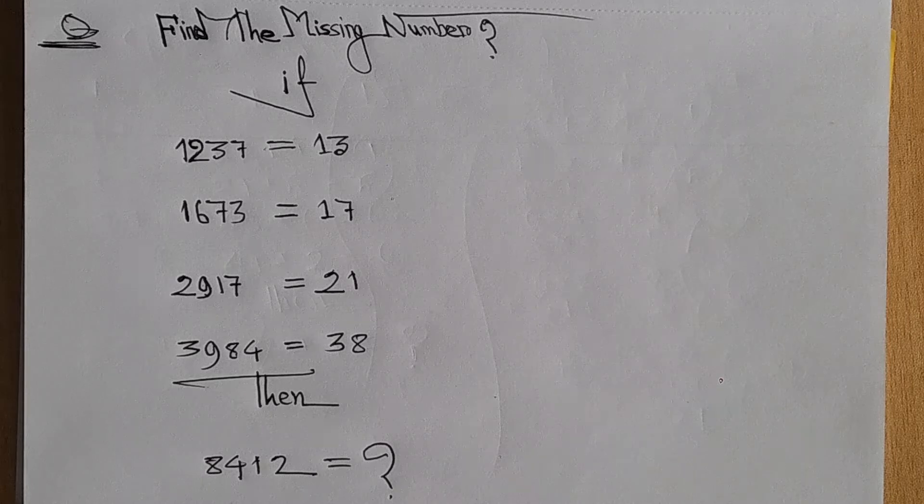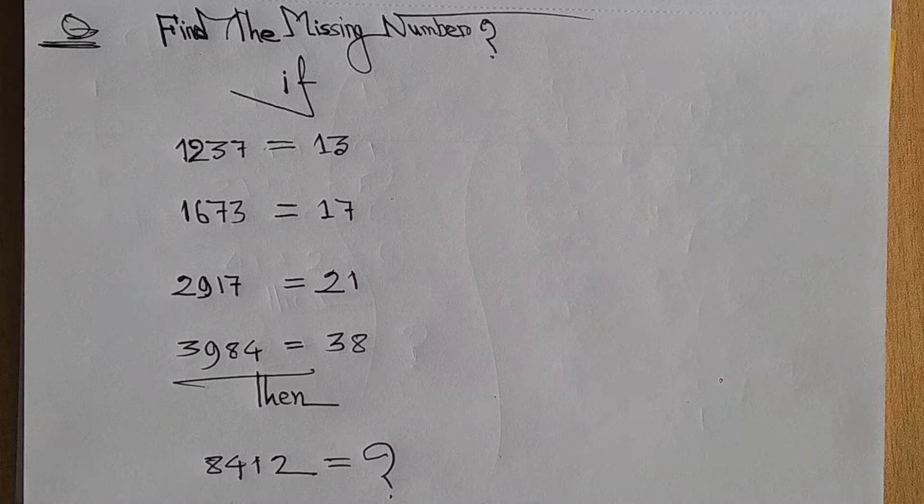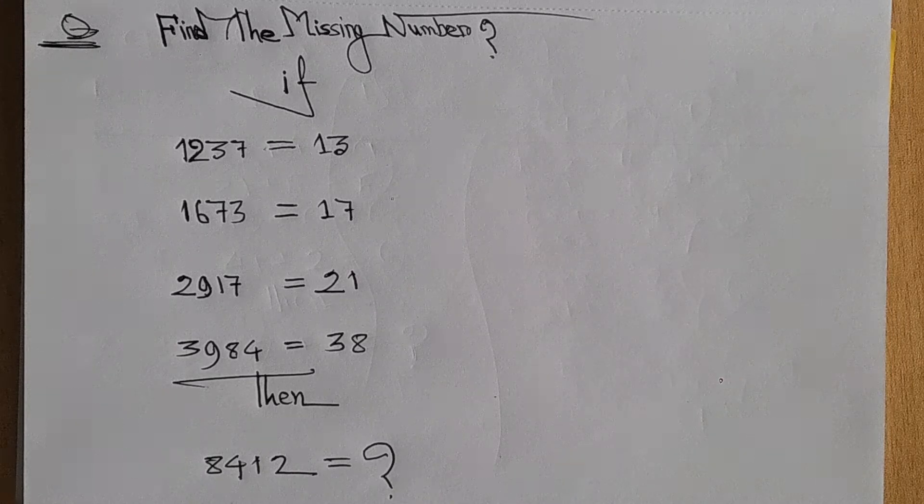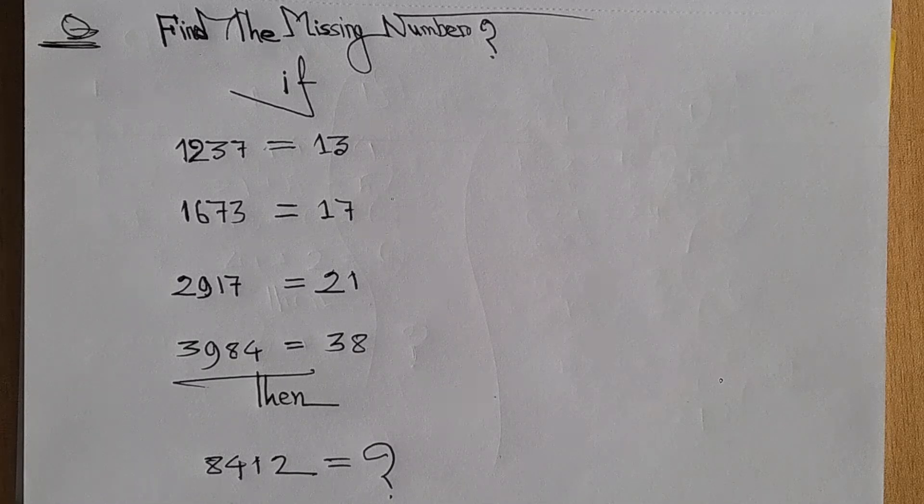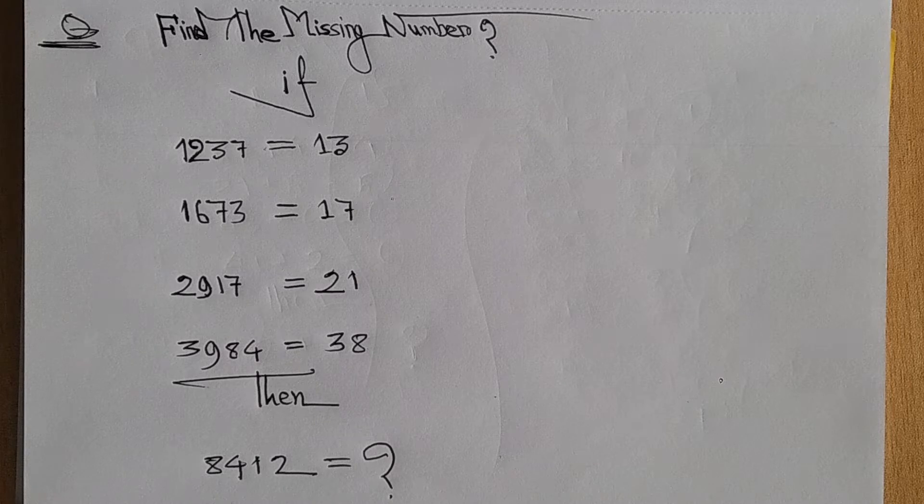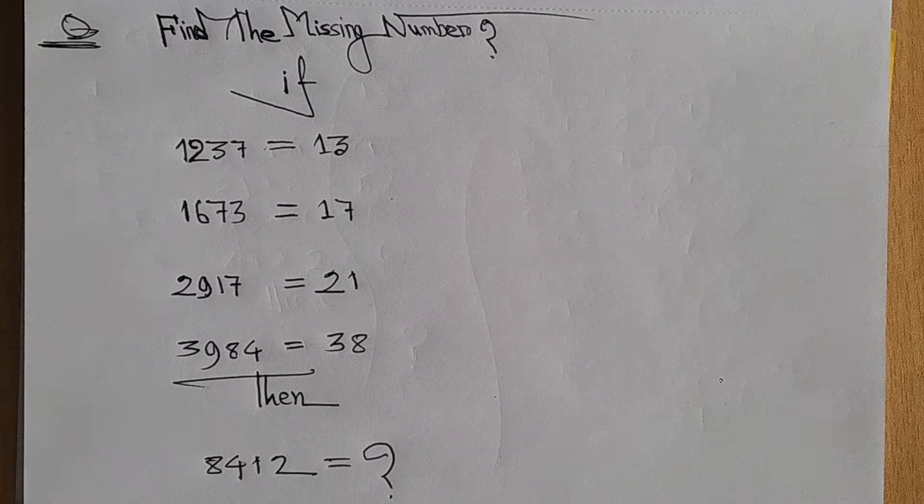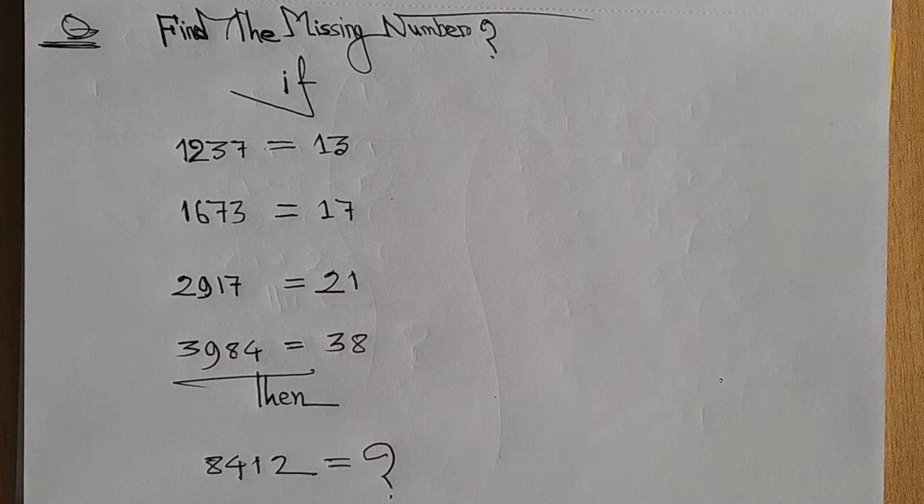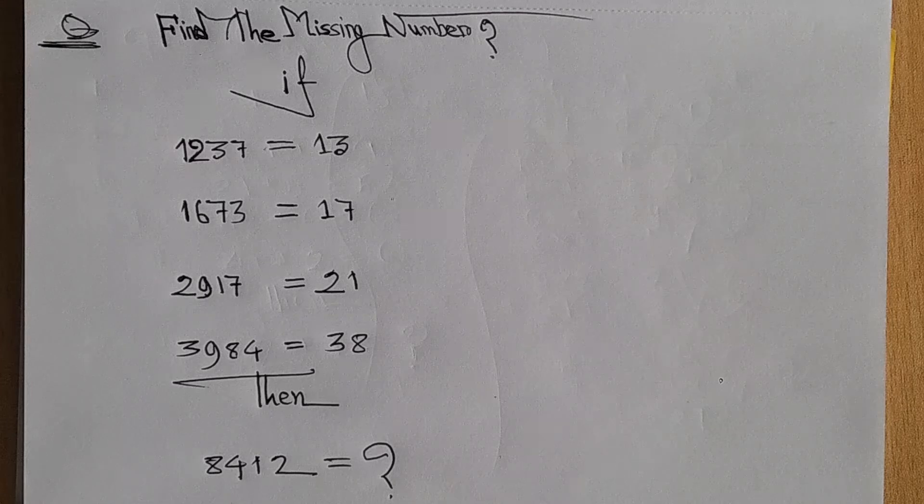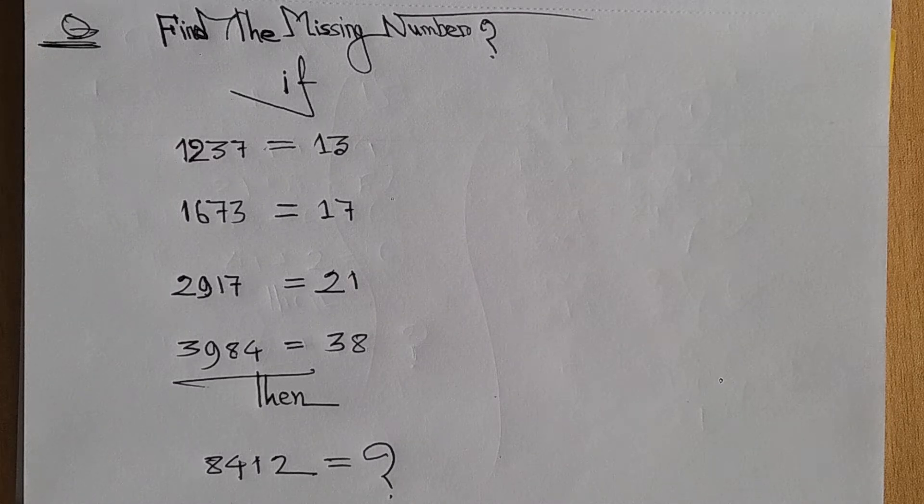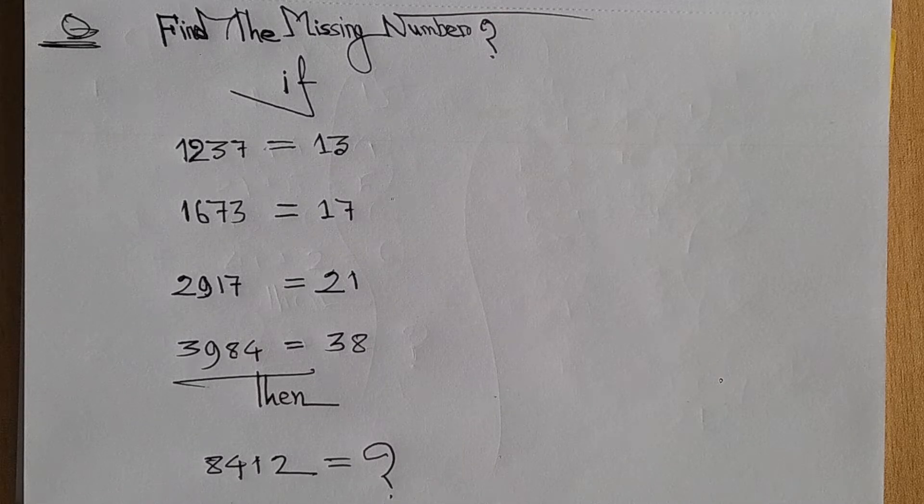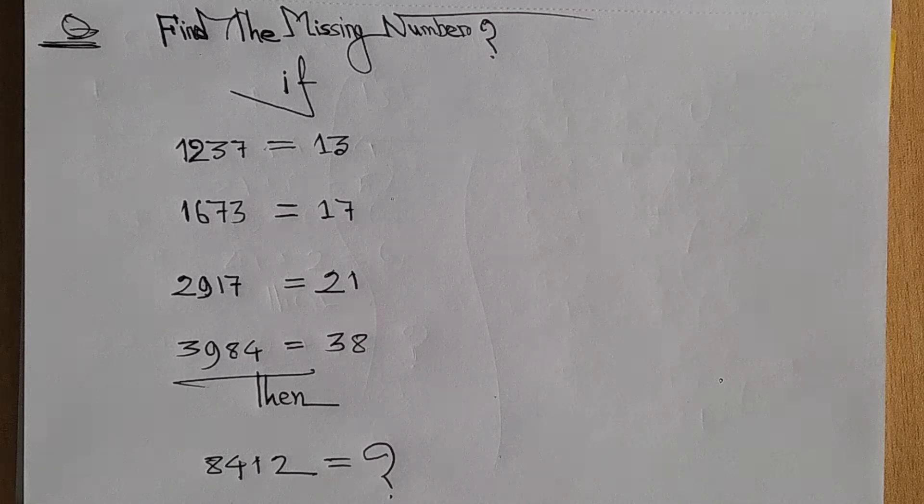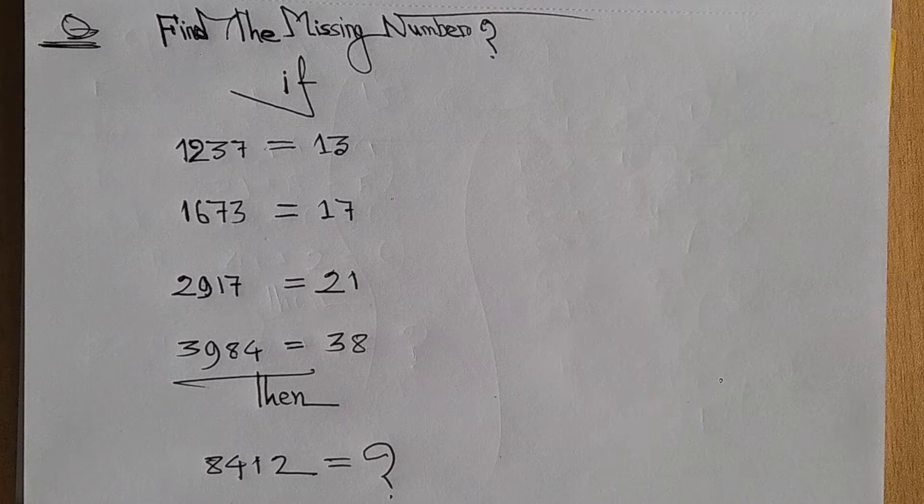So I am here with another math problem. Find the missing number. I'm going to read the problem: 1237 equals 13, 1673 equals 17, 2917 equals 21, 3984 equals 38. Then 8412 equals question mark. I'm going to find what this question mark is - the missing number.